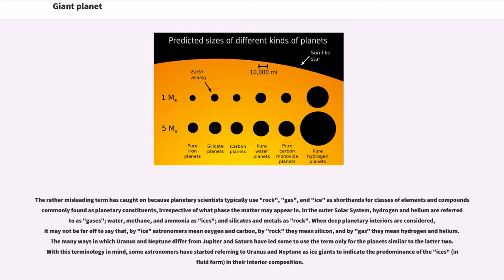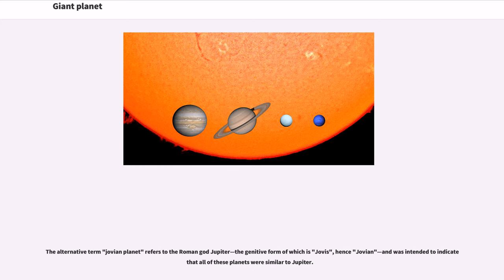The many ways in which Uranus and Neptune differ from Jupiter and Saturn have led some to use the term only for the planets similar to the latter two. With this terminology in mind, some astronomers have started referring to Uranus and Neptune as ice giants to indicate the predominance of the ices, in fluid form, in their interior composition. The alternative term Jovian planet refers to the Roman god Jupiter, the genitive form of which is Jovis, hence Jovian, and was intended to indicate that all of these planets were similar to Jupiter.